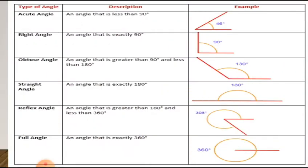Now let's recap the concepts we learned in the last class. We learned about the types of angles: acute angle, right angle, obtuse angle, straight angle, reflex angle, and full angle or complete angle. These are the different types of angles.